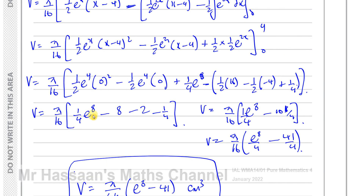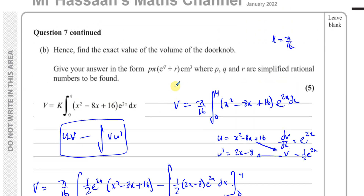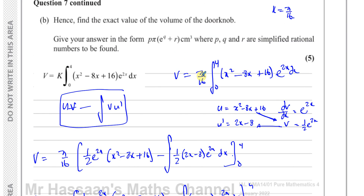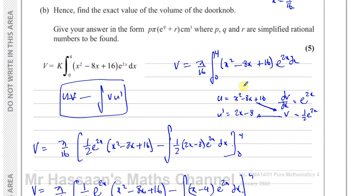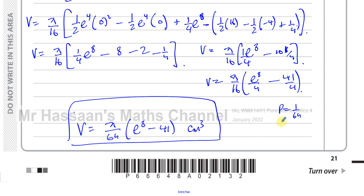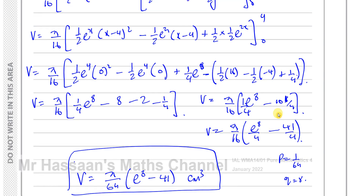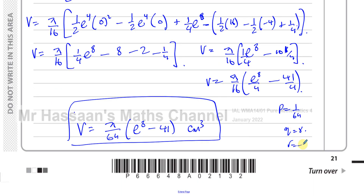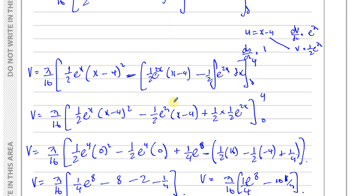There's the answer to this question. Written in the required form p times π e to the power of q plus r: p is 1 over 64, q is equal to 8, and r is negative 41. That's our answer written in the form something times π, e to the power of something, minus 41.